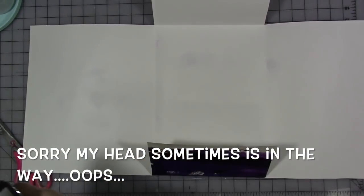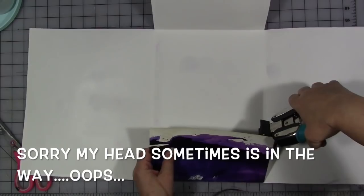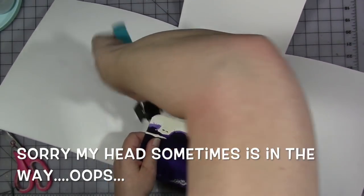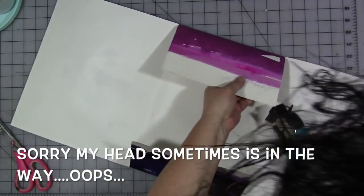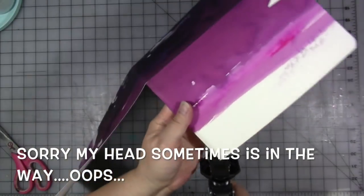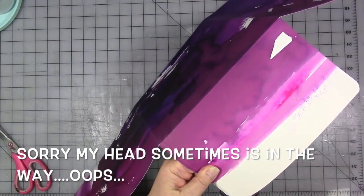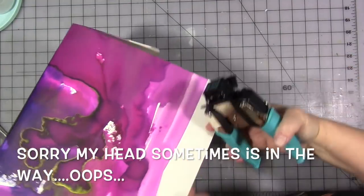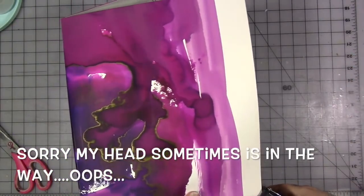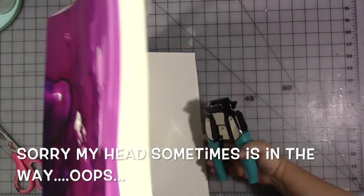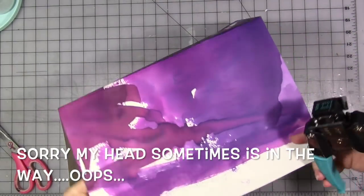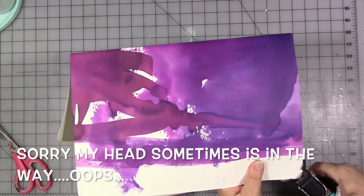Okay. First thing I want to do is I want to round all the corners. So I've got my crop-a-dile here. I'm going to put it in the middle and really close the crop-a-dile here. I'm going to get rid of these little edges.